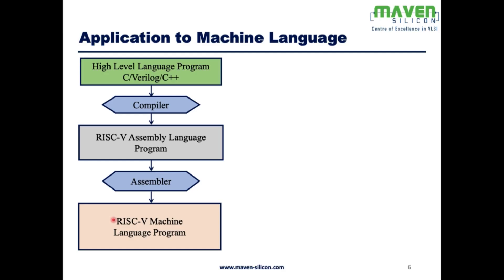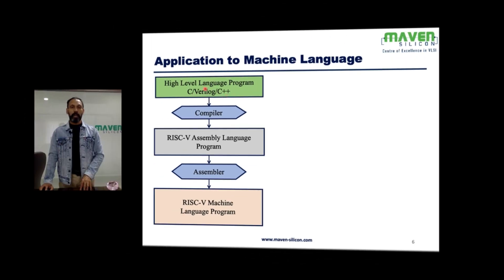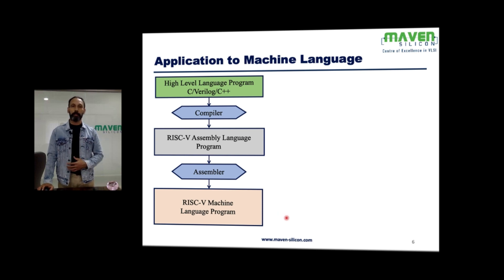Let me show you the transformation steps of how we convert software applications into machine language programs. Whatever applications we create using high-level languages like C or C++ will be compiled into assembly language, and then the assembler converts the assembly language into machine language. Everything is going to be in binary, and the processor executes only machine language programs.